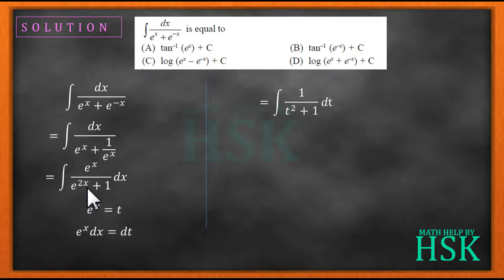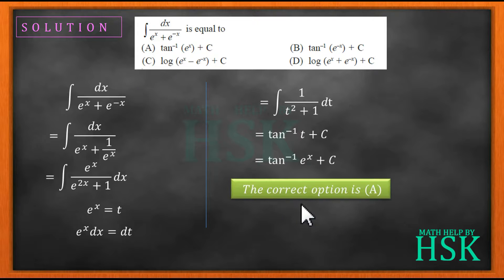And we know that integration of 1 upon t square plus 1 dt would be equal to tan inverse of t. T is equal to e to the power of x, so tan inverse of e to the power of x would be the value of this integral. So the correct option is A. So this is how we are going to solve this question, friends.